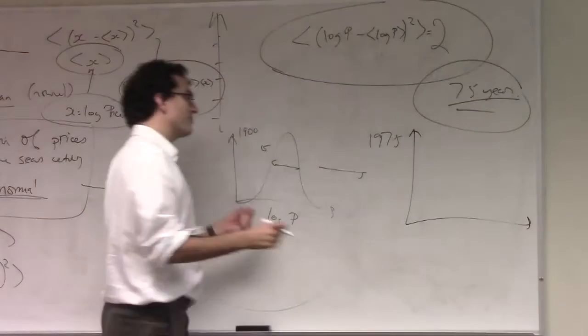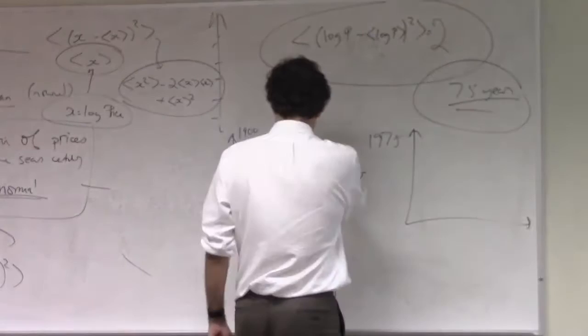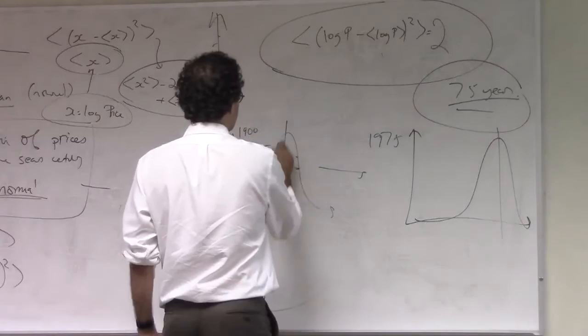In 1975, if every single good in the Sears Roebuck catalog was still in the catalog in 1975, and every single good inflated at the same rate, then the mean would go up. The mean would go up. But all these goods, all these columns here, would all grow by the same amount.